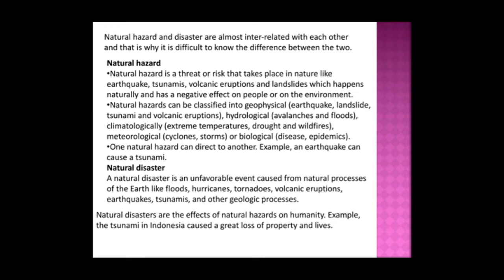Natural hazard and disaster are almost interrelated, which is why it is difficult to know the difference between the two. A natural hazard is a threat or risk that takes place in nature — like earthquakes, tsunamis, volcanic eruptions, and landslides — which happen naturally and have a negative effect on people or the environment. Natural hazards can be classified into geographical (earthquake, landslides, tsunami, volcanic eruption), hydrological (avalanches and flood), climatological (extreme temperature, drought, wildfires), meteorological (cyclones, storms), and biological (disease epidemics). One natural hazard can lead to another — for example, an earthquake can cause a tsunami.